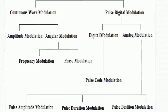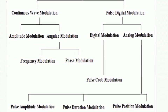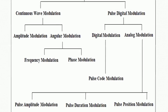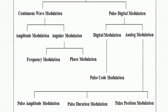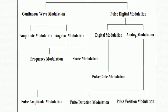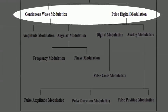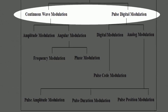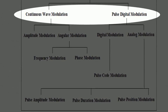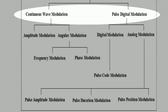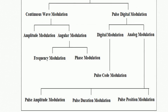At the beginning we said that the carrier could be either analog or pulses. If the carrier is analog — that is, a continuous wave — then it comes under continuous wave modulation. If the carrier is pulses, then it will be digital modulation or pulse digital modulation, which can be further classified.